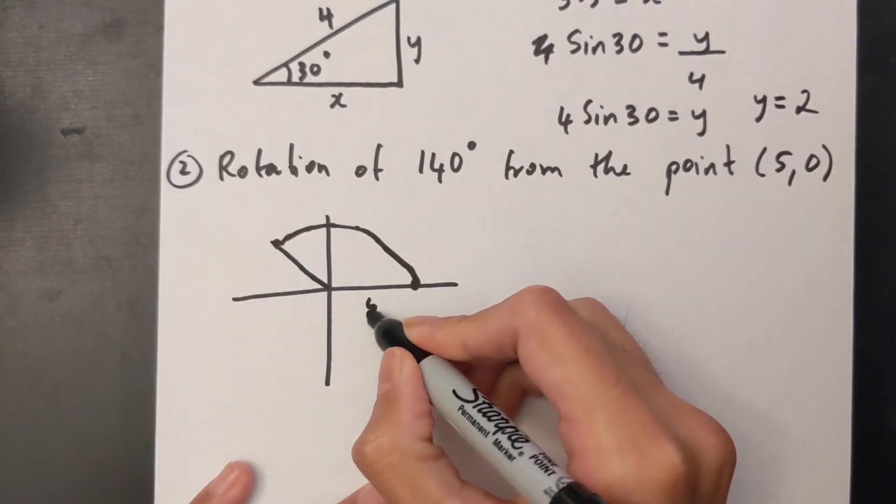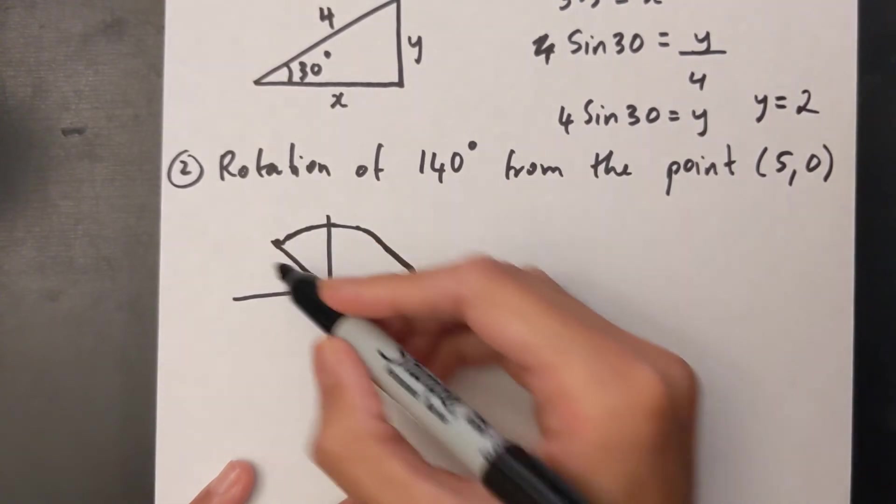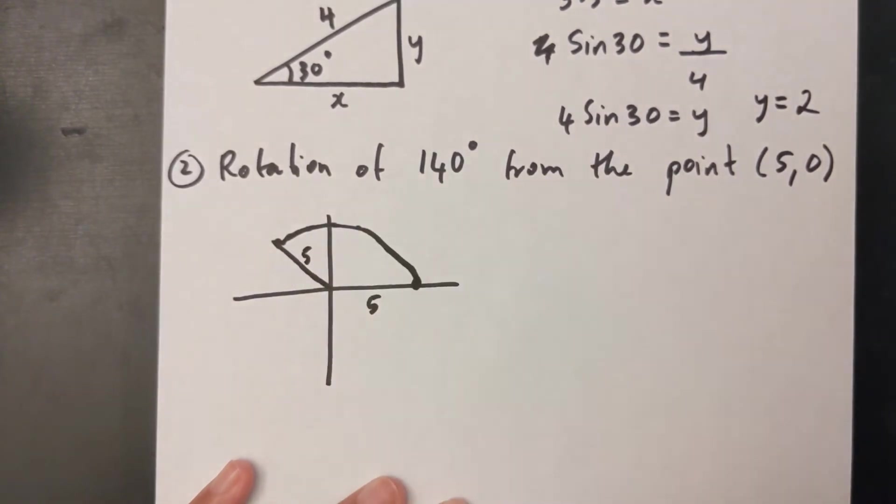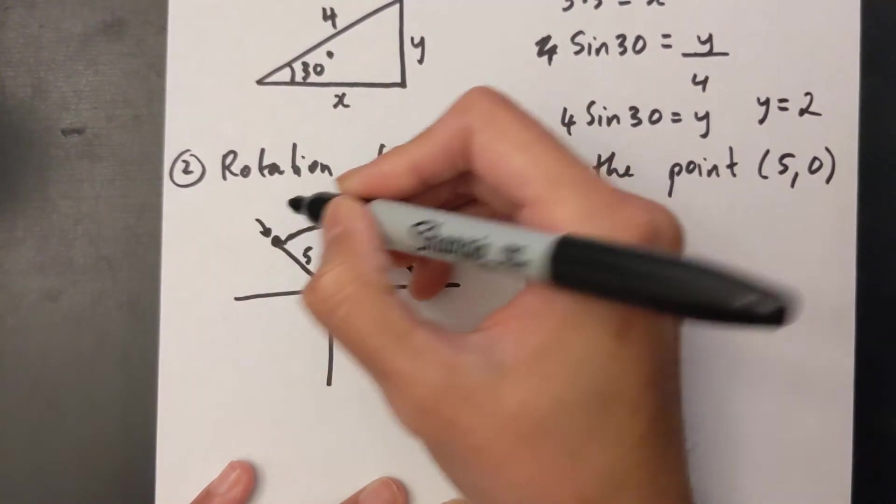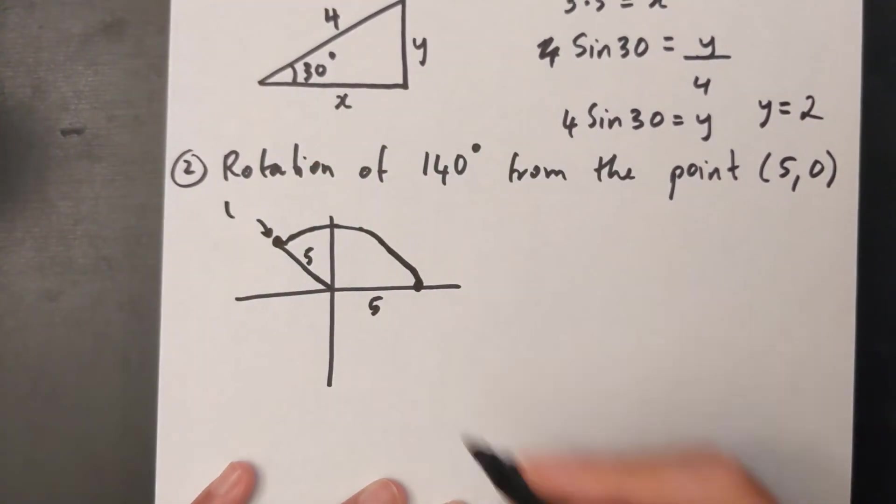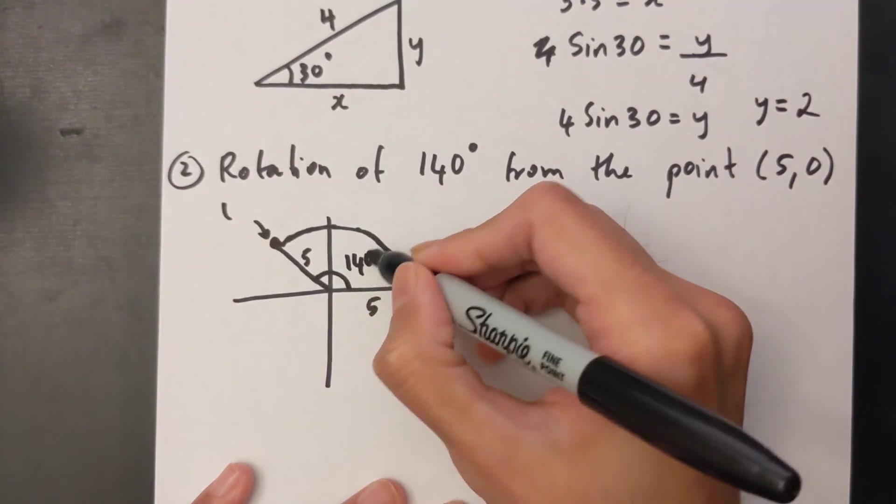Now I know this distance is 5. This is the radius of the circle, which means this distance also has to be 5. Now I need to find the coordinates of that point right over there. I know that this whole angle is 140 degrees.